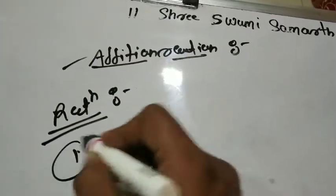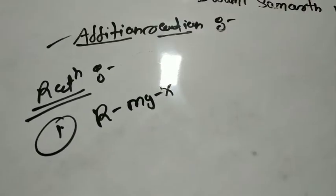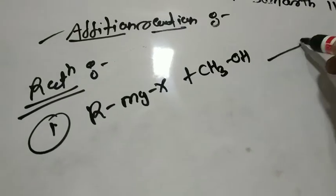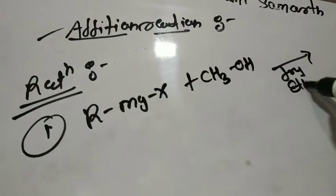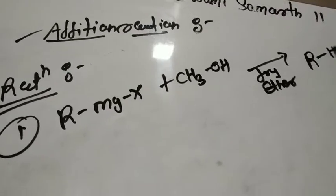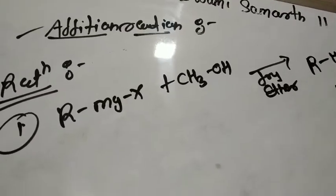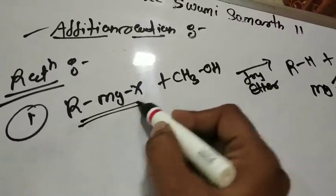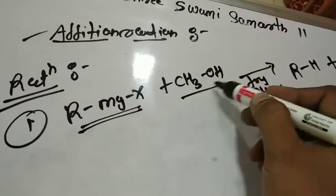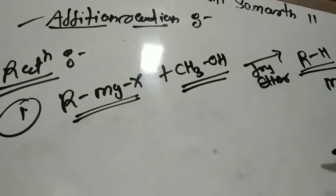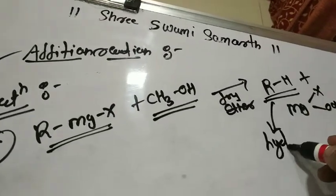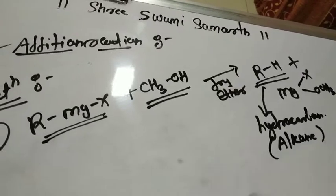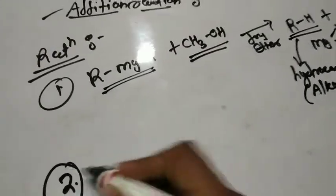Reaction number 1: RMgX plus CH₃OH in presence of dry ether gives RH plus MgX·OCH₃. When a Grignard reagent reacts with an alcohol, it gives a hydrocarbon — specifically an alkane.